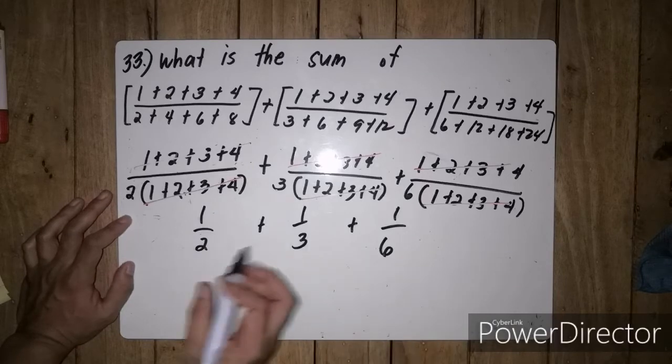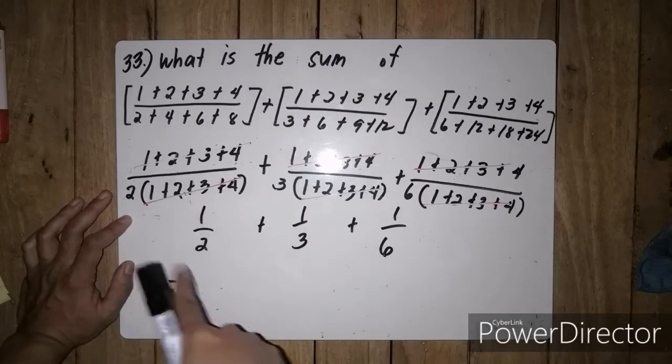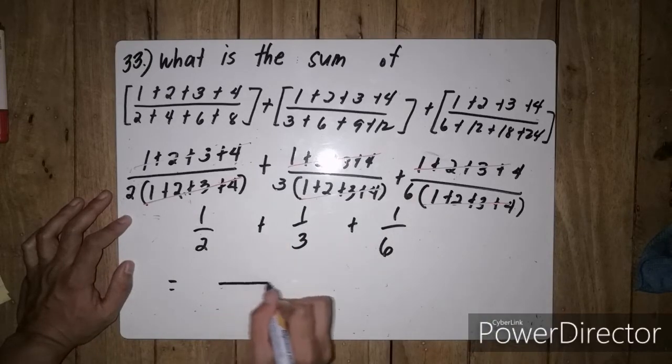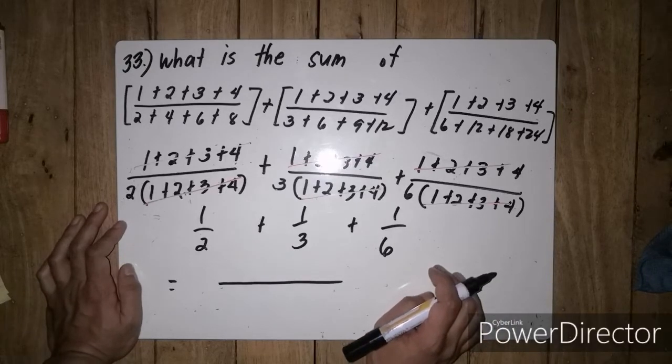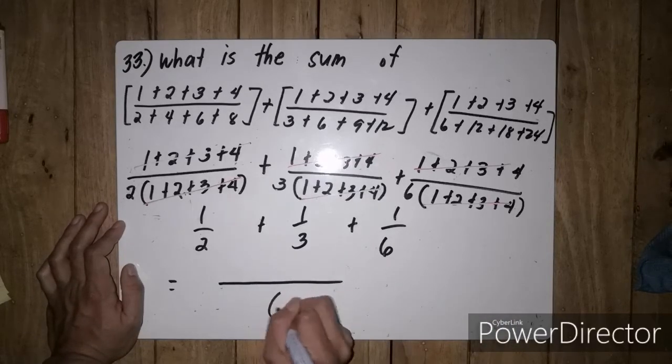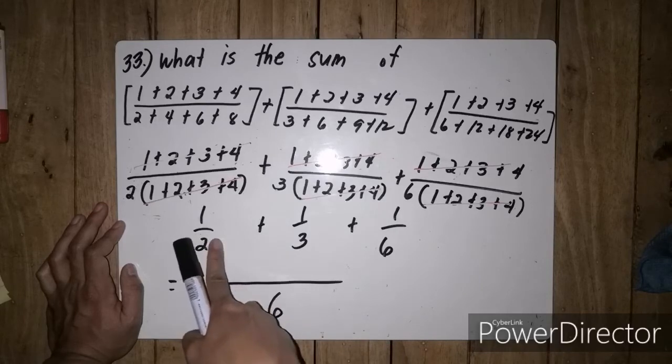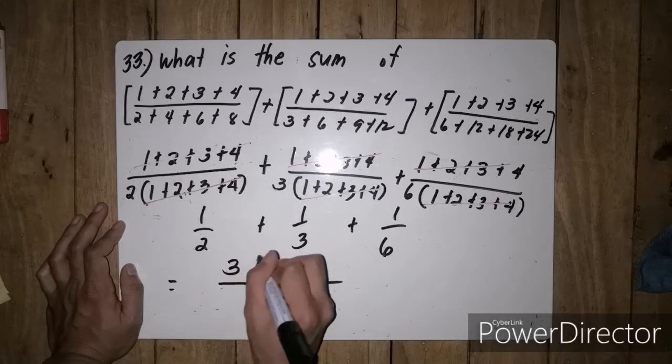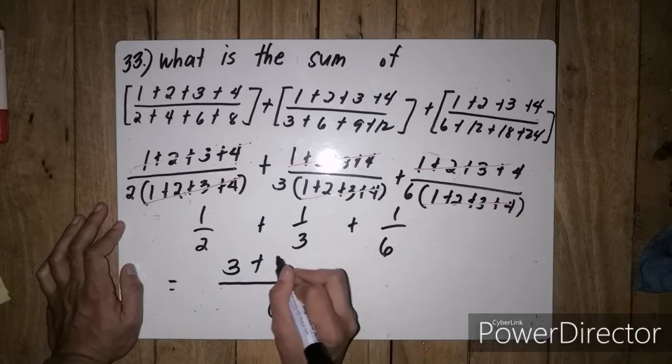It's not yet the final answer because we need to find the sum of 1 half, 1 third, and 1 sixth. Their least common denominator is 6.